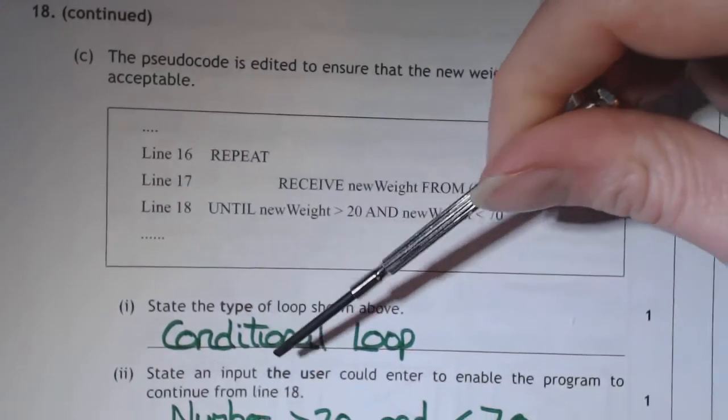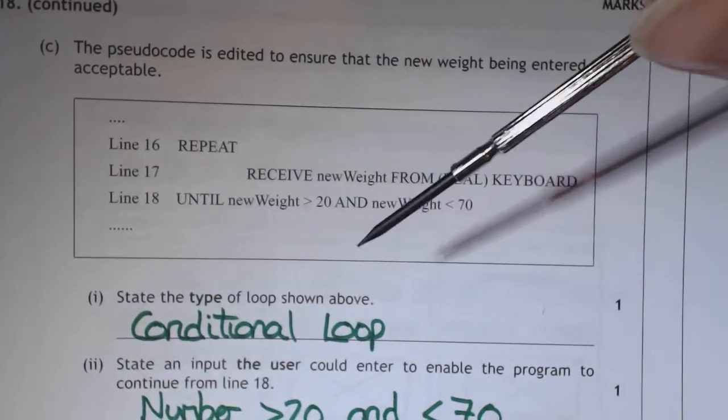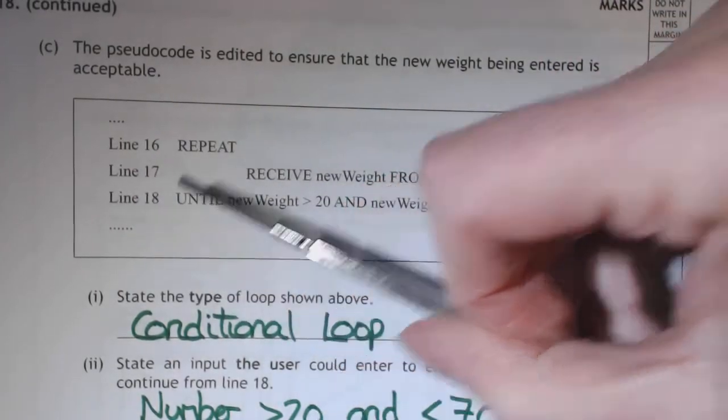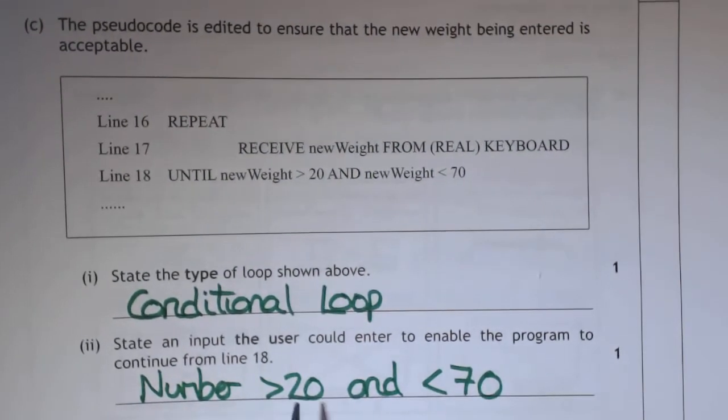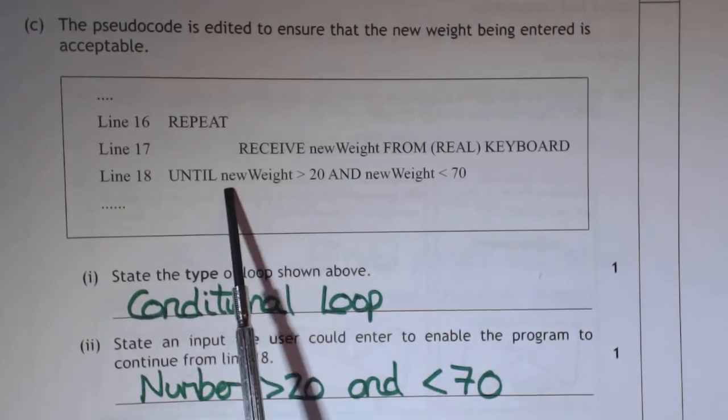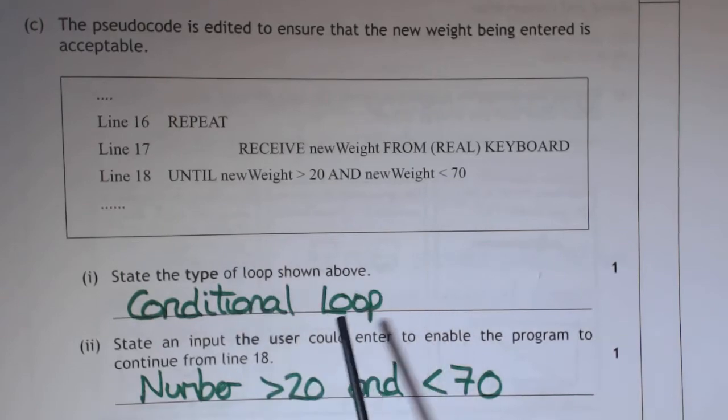So it does say here, state an input that you could enter to enable the program to continue. Well, no doubt it'll go to line 19. So as long as you enter a number that's between 20 and 70, or it's above 20 and less than 70, then that means that's satisfied, so it goes on to the next one.